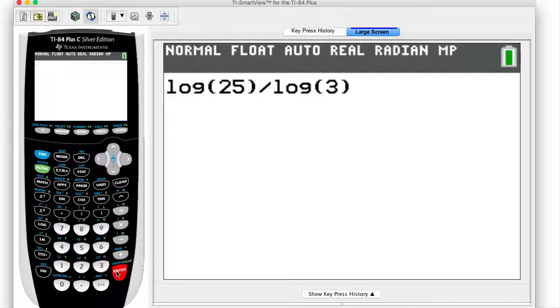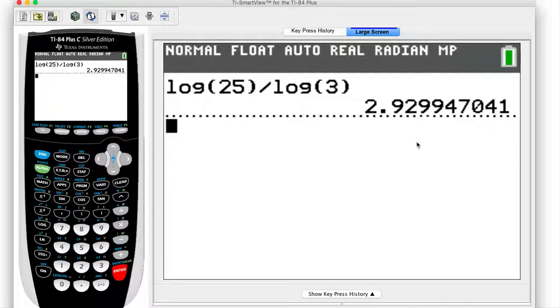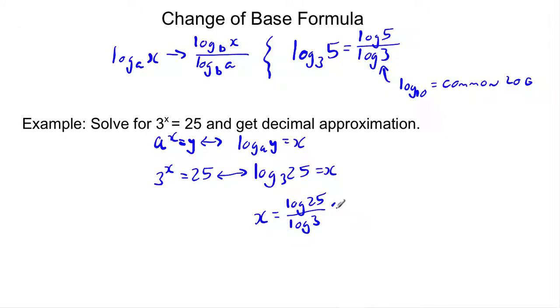we're going to get some weird decimal. So I'm going to round this off at the hundredths. I'm going to say this is 2.93. So my answer here is 2.93. That is my decimal approximation.